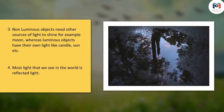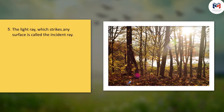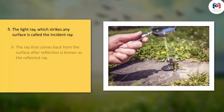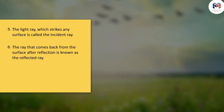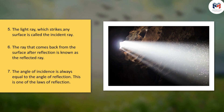Most light that we see in the world is reflected light. The light ray which strikes any surface is called the incident ray. The ray that comes back from the surface after reflection is known as the reflected ray. The angle of incidence is always equal to the angle of reflection — this is one of the laws of reflection.